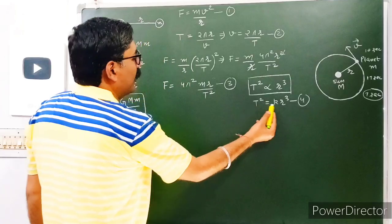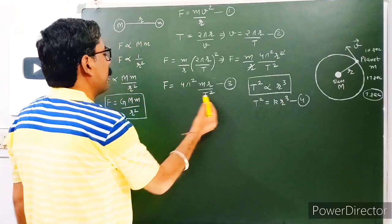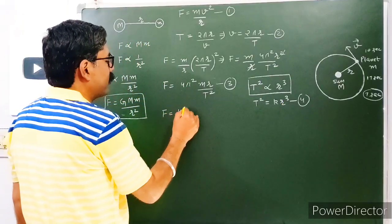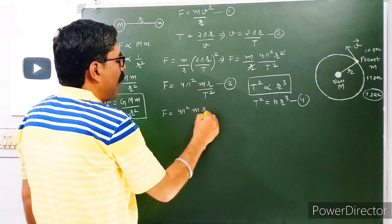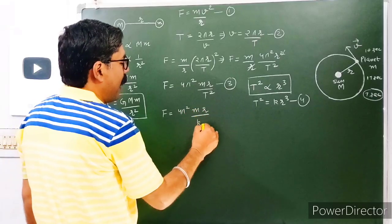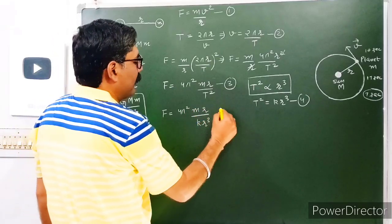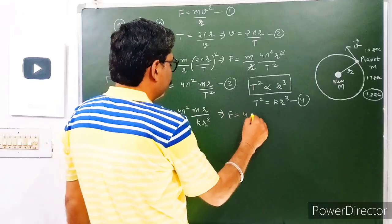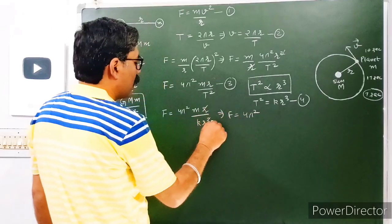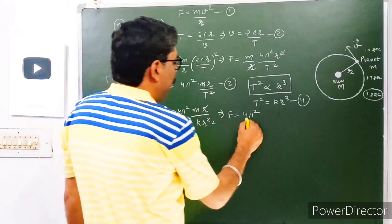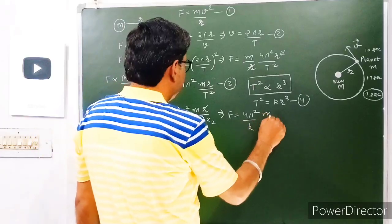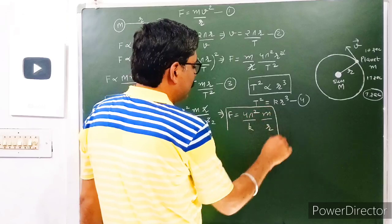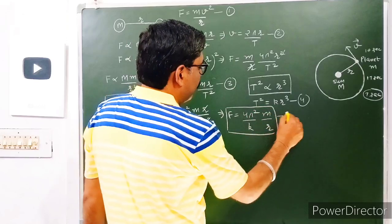Putting the value T² = kr³ from equation 4 into equation 3, you will get F = 4π²mr/(kr³). Simplifying, you are left with F = (4π²/k)(m/r²). Let us mark this as equation number 5.